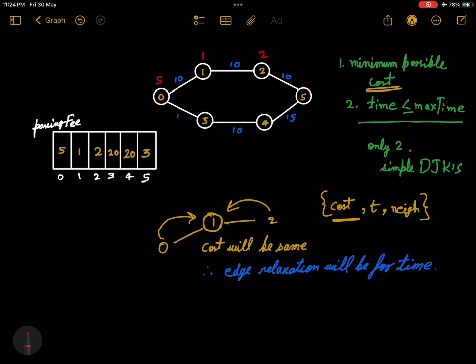Now let's see in the graph. Let's mark the passing fee for each node: for node 0 it's 5, for 1 it's 1, for 2 it's 2, for 3 and 4 it's 20, and for 5 it's 3. Now if we move from 0 to 3, then 4 to 5, our cost will be 5 plus 20 plus 20 plus 3, which is 48, and time will be 26.